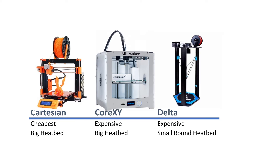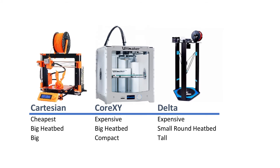Cartesian style 3D printers allow the biggest heat pads, and Core XY 3D printers can get big as well, while Delta 3D printers have a pretty small heat pad that is also round instead of rectangular. In terms of size, Cartesian printers are usually mid-size, Core XY printers are really compact, and Delta printers are very tall.